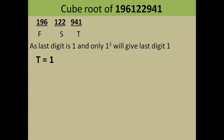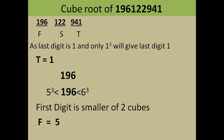Now we find the first digit. We take the first group, 196, and see between which two consecutive cubes it lies. 196 is greater than five cubed (125) and smaller than six cubed (216). So 196 lies between 125 and 216. The first digit is the smaller of the two — so the first digit is 5.